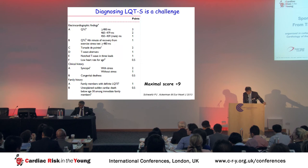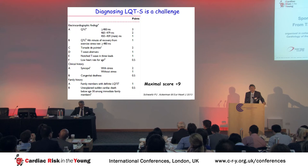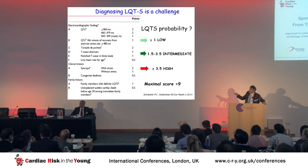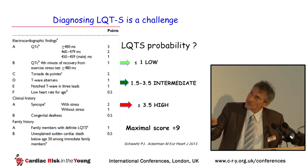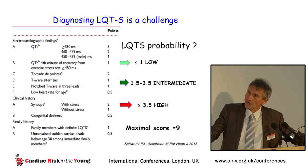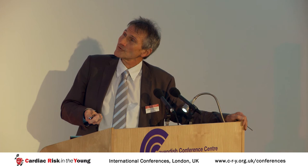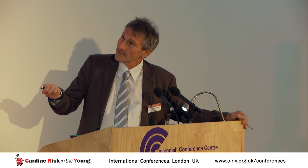Diagnosing long QT syndrome is a real challenge. The Schwartz-Ackermann score incorporates QT interval duration, corrected QT duration during recovery after exercise, arrhythmias, T-wave abnormalities, clinical history, and family history. A score of 1 or below indicates low risk, 1.5 to 3.5 is intermediate risk, and above 3.5 is high risk.